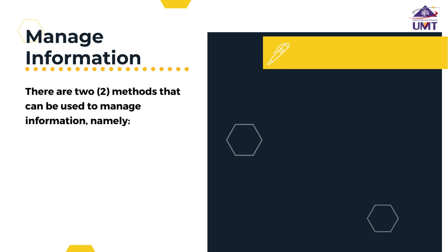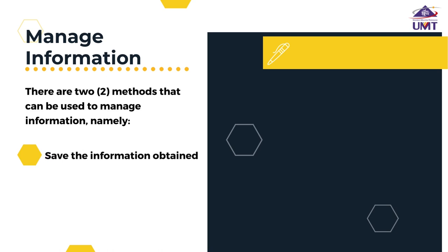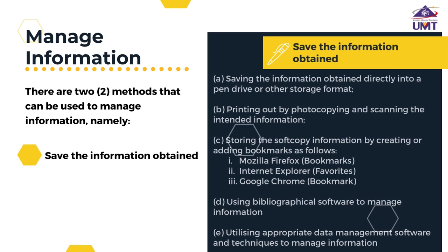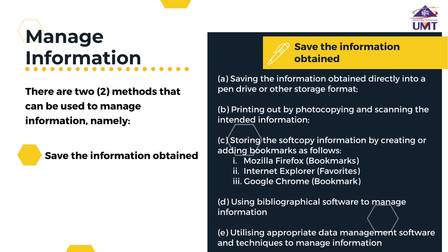There are two methods that can be used to manage information. The first is saving the information obtained directly into a pen drive or other storage format, and printing out by photocopying and scanning the intended information.